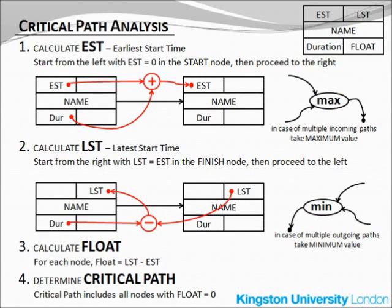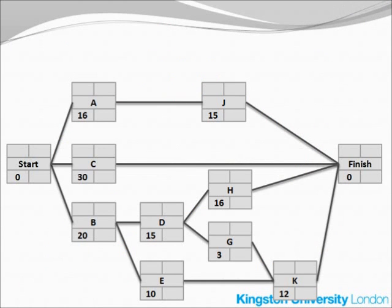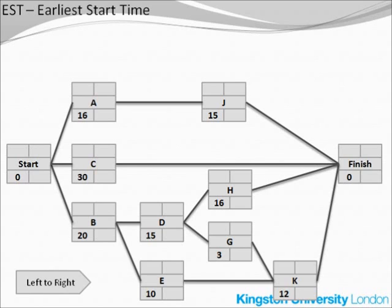This slide is a recipe for all the remaining calculations we have to do. We will calculate the earliest start time, the latest start time, the float, and then we will determine the critical path. Back to the activity network, we will now calculate the earliest start time, or EST, for each activity. This calculation starts with the start node, goes from left to right, and finishes with the finish node. The EST is normally shown in the upper left-hand corner of each activity box. With the start node, the EST — the earliest start time — is always zero.